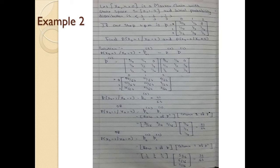Next example: let Xn be a Markov chain with state space S and initial probability distribution 1/3, 1/3, and the TPM is given. We are asked to find: first, P(X3=1 | X0=2); and second, P(X3=2 | X1=2). Starting with the first one: P(X3=1 | X0=2) = P21 raised to 3, because the difference between step 3 and step 0 is 3.